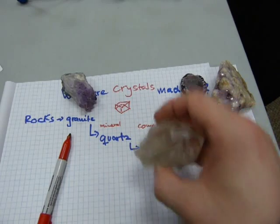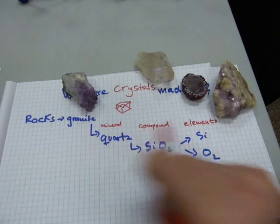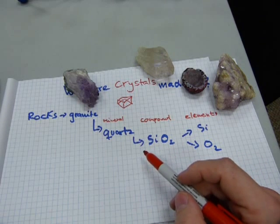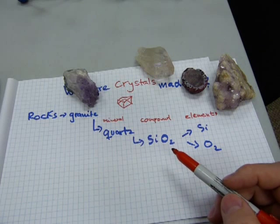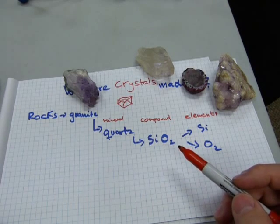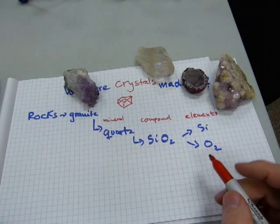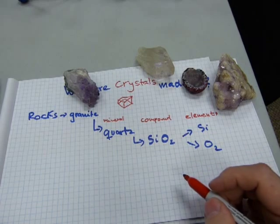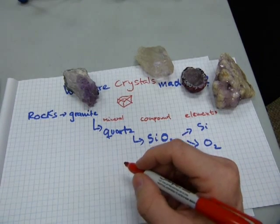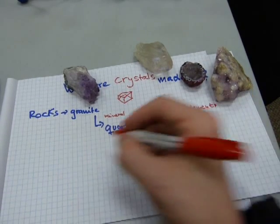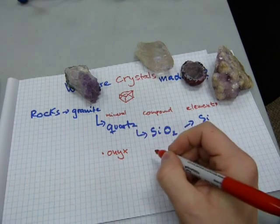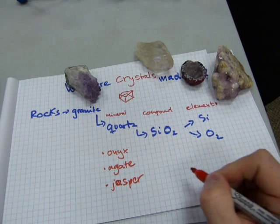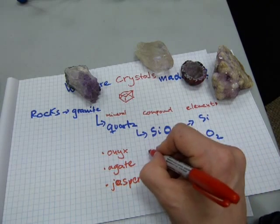There are other forms of quartz crystals depending on other elements joining in the crystal formation, because depending on how it forms — according to temperature and pressure inside the earth — crystals can have some different other elements with them. These ones are all colored purplish by a little bit of iron mixing in with the silicon dioxide. Other minerals that are also quartz crystals include onyx, which is black; agate; and jasper, which is red. Amethyst — these ones here — are also quartz crystals.